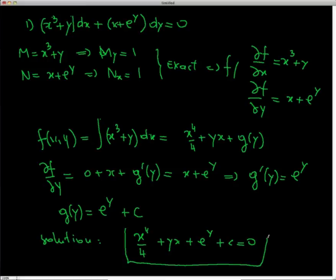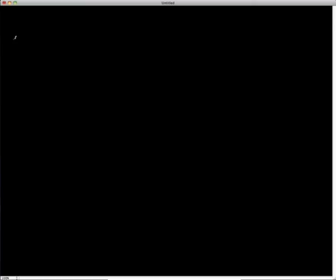For Example 1, we couldn't find separable or linear, so we solved it as exact. Now let's see Example 2: dy/dt = sin(t) − tan(t)·y.